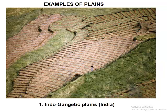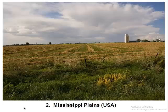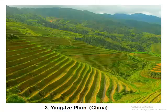Let's look at some examples of Plains. One is the Indo-Gangetic Plains, one of the world's well-known plains, found in India. Secondly, we have the Mississippi Plains in the United States, also one of the most talked-about plains in the world. Then we have the Yangtze Plain in China. In fact, every place has a plain because every place has lowlands, but these are the most widely known plains in the world.